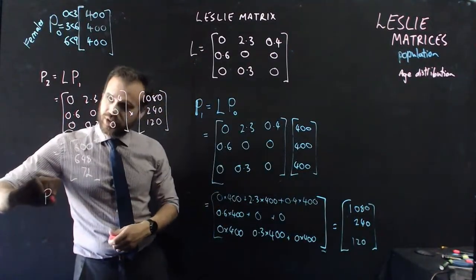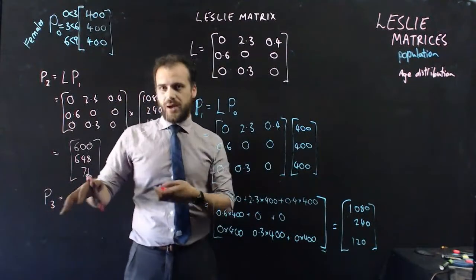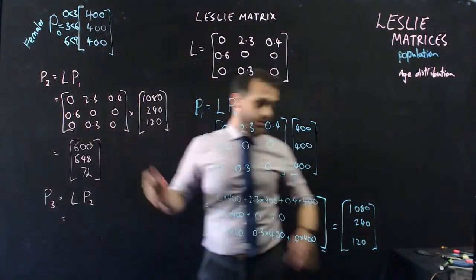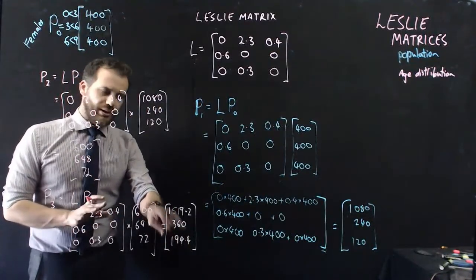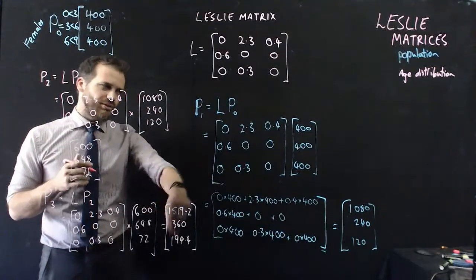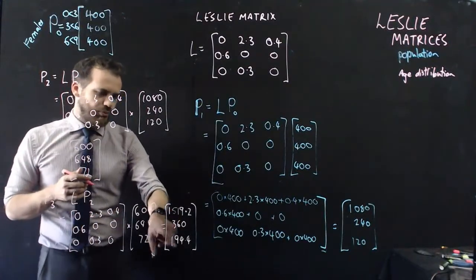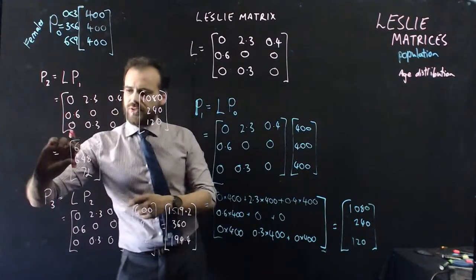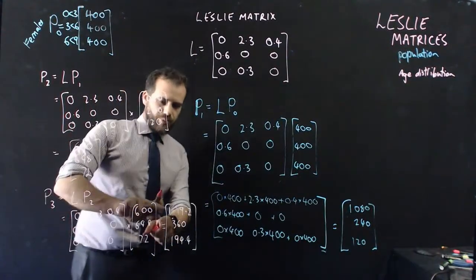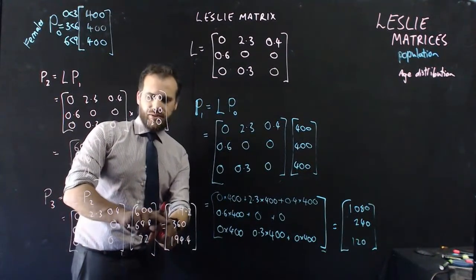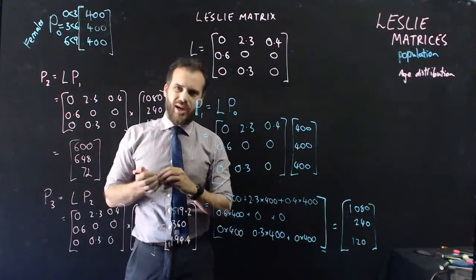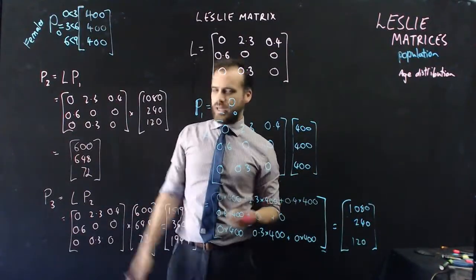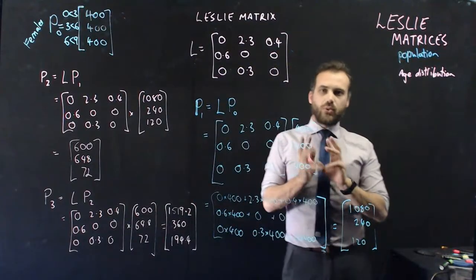We could do the whole thing again: population 3 equals L times population 2. If you do that, you get something like [1519.2, 360, 194.4] — lots of young ones, and now the zero to threes and three to sixes are closer. This is fine, but it's tedious, because if I wanted to know the population in 30 years I'd have to do this seven more times. Luckily, there is a much faster way.